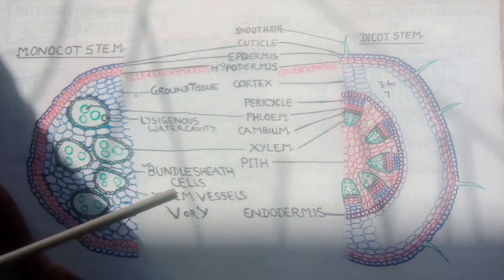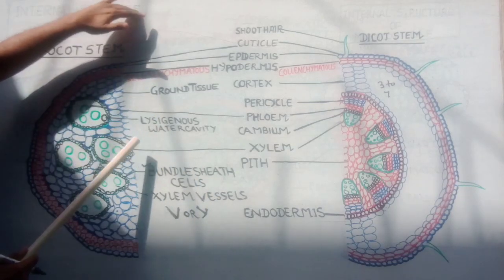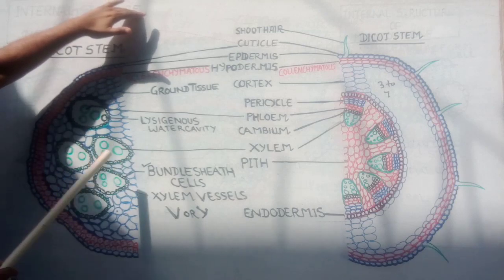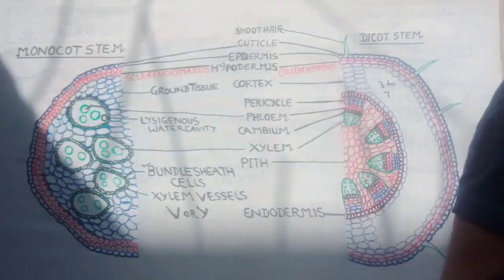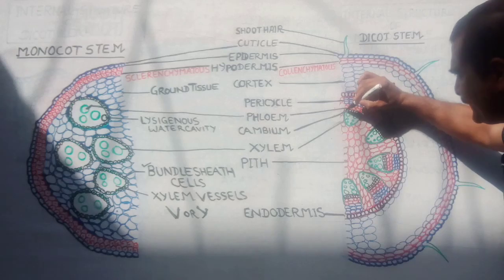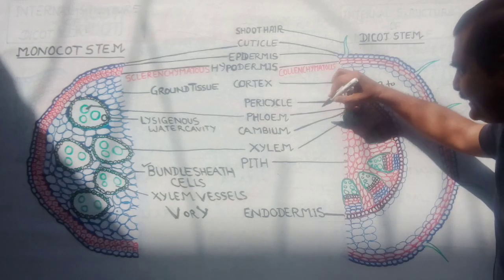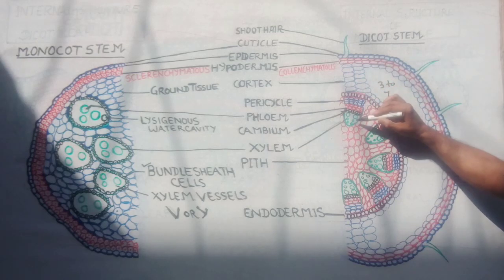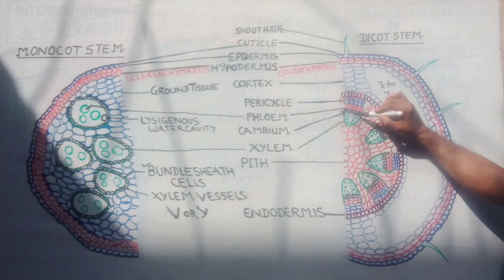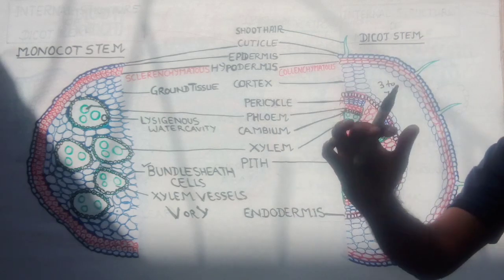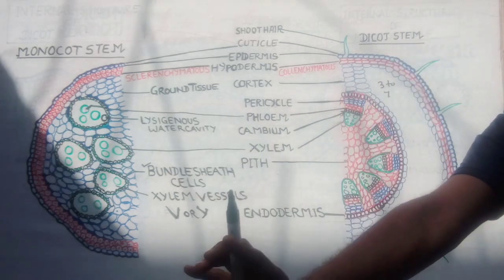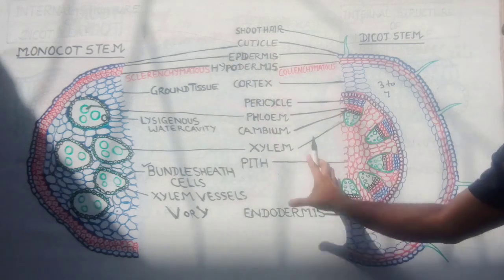Monocot vascular bundle is close type because cambium is absent between xylem and phloem — no secondary growth. In case of dicot, between the xylem and phloem there is a cambium strip — the black color region between red and green — cambium is present, so the vascular bundle is open type and secondary growth takes place. Important: in case of leaves, endodermis and pericycle are absent.